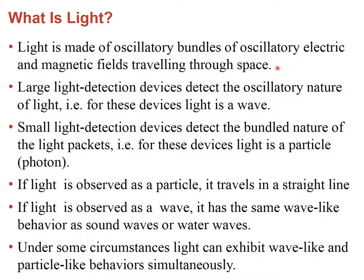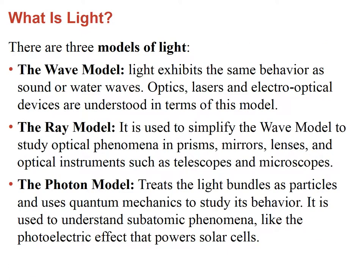Light is observed as waves of electric and magnetic fields. If light is observed as a particle, it travels in a straight line, but if observed as a wave, it exhibits all wave phenomena like refraction. The photon model applies to experiments requiring detection of light as particles, while the wave model describes the propagation of light when the apparatus is large compared to the wavelength.